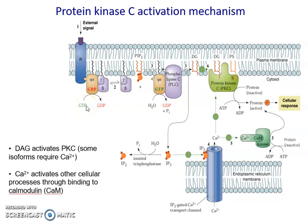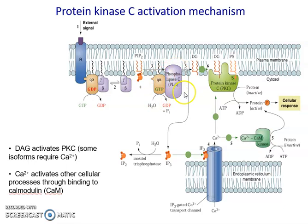Once we have recycling of the GDP back into GTP, we have activation of the alpha subunit. It dissociates from the beta-gamma subunits and then associates itself with the phospholipase C, and it's going to activate it.